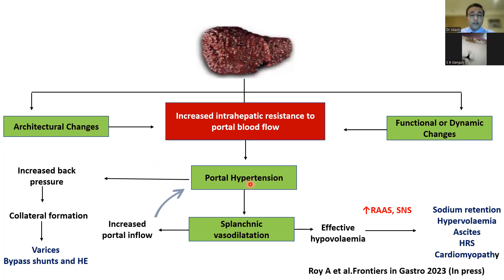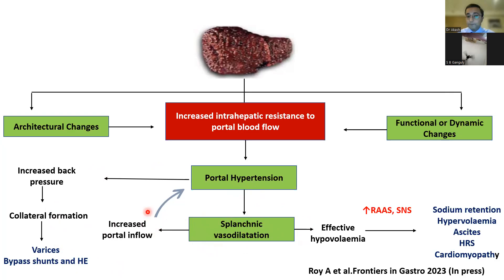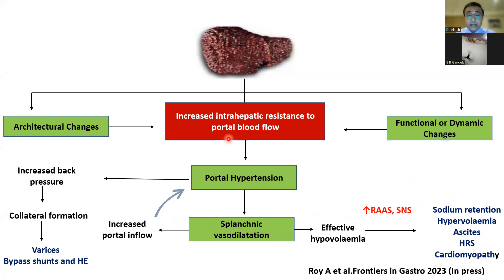Besides back pressure, portal hypertension also leads to congestion of the splanchnic circulation. Once you've got increased flow, portal inflow increases. Resistance increased, vasodilatation occurred, flow increased — you develop portal hypertension. In patients with cirrhosis, this leads to effective hypovolemia, activating the renin-angiotensin system and sympathetic nervous system, leading to sodium retention, ascites, hepatorenal syndrome, and cirrhotic cardiomyopathy. This functionally addresses the core concepts of portal hypertension as specifically demonstrated in cirrhosis.